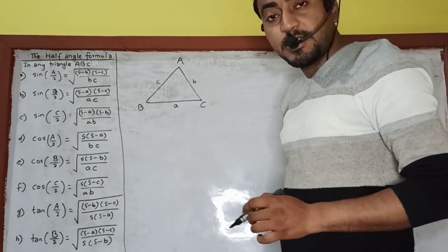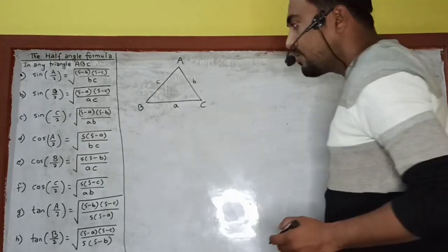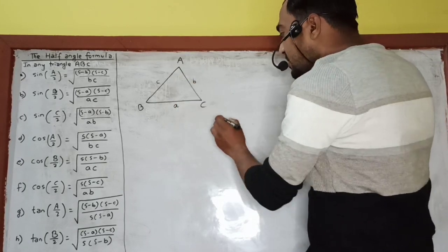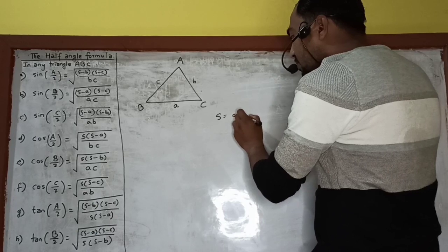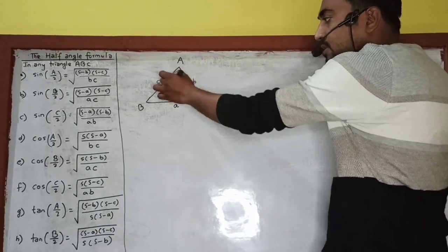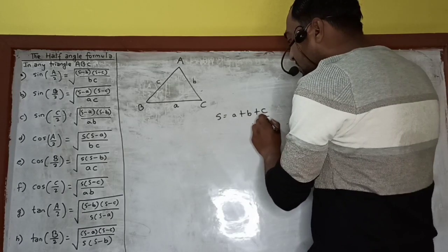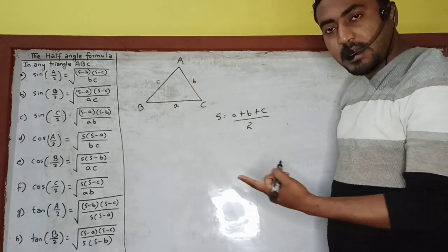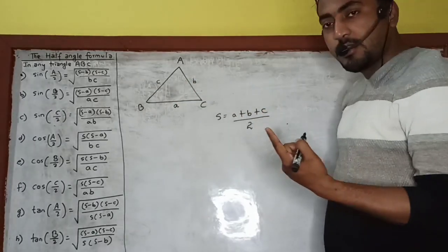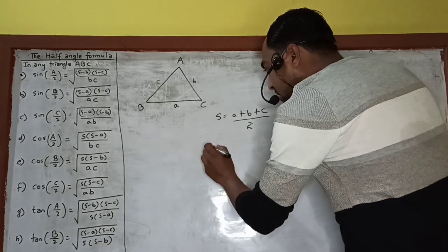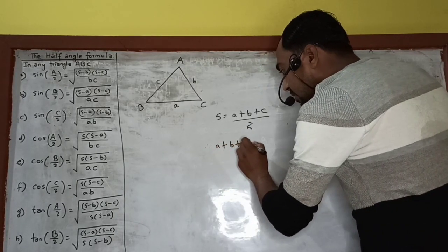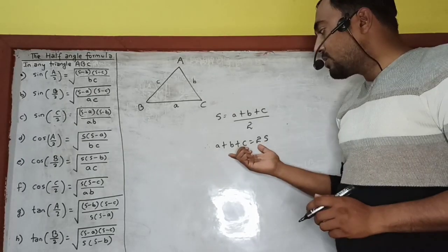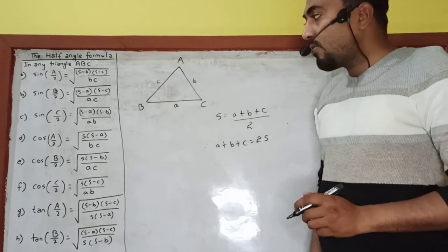Now, what does S represent? S represents the semi-perimeter of the triangle. S is equal to (a + b + c) / 2, which gives the perimeter divided by 2. Therefore, a + b + c is equal to 2S. This relation is going to be used frequently to prove all these statements one by one.